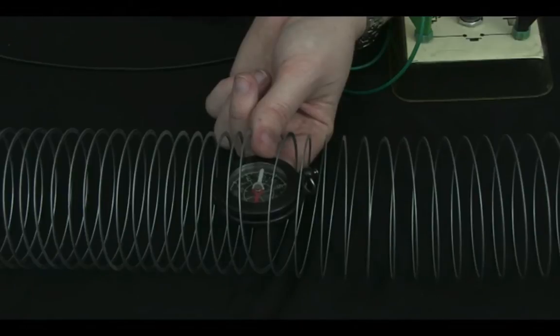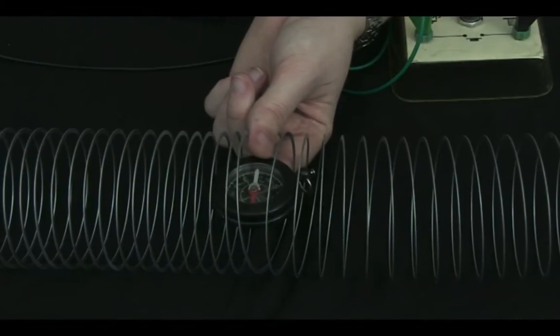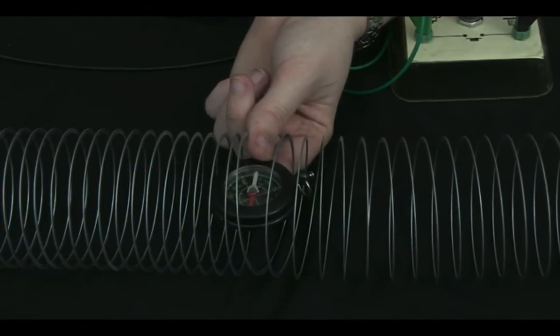Now I've placed a compass in the middle of my slinky coil. At the moment, there's no current flowing along the slinky coil, but have a look at what happens when I close this switch.